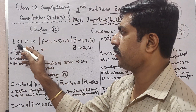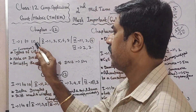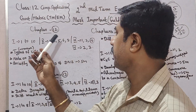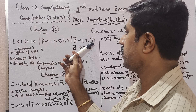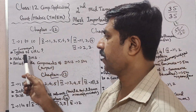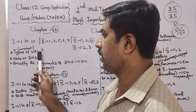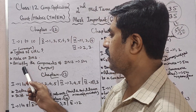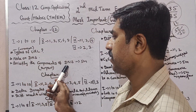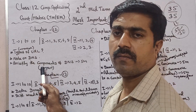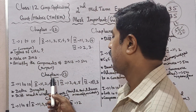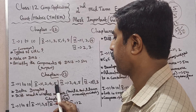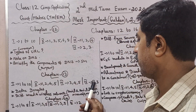In Chapter 12, the mark allocations are: 1 mark, 1 mark, 1 mark, 3 mark, 4 mark, 5 mark, 4 mark, 1 mark, and 3 mark questions inside.